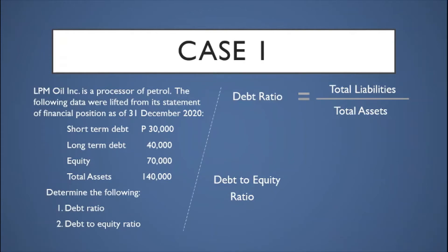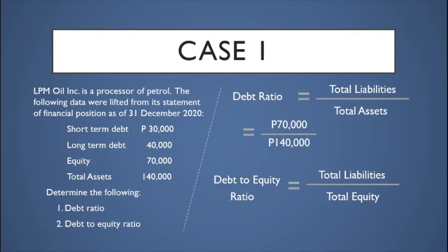The debt ratio equals total liabilities over total assets. Total liabilities is the sum of short-term and long-term debt: ₱30,000 plus ₱40,000 equals ₱70,000, divided by total assets of ₱140,000. The debt ratio is 0.50:1. Interpretation: for every peso of assets controlled by the company, ₱0.50 is financed by debt and ₱0.50 comes from equity — meaning 50% of the assets' book value is funded by liabilities.